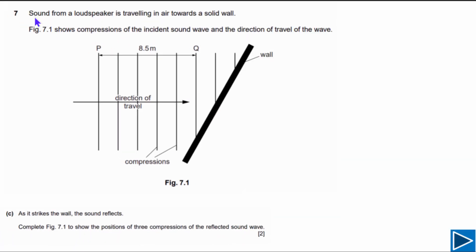For question number seven, sound from a loudspeaker is traveling in air towards a solid wall. The solid wall is shown, and the direction of travel is the incident ray. The lines represent compressions, which are the wave fronts. We need to complete figure 7.1 to show the positions of three compressions — that is, three wave fronts — of the reflected sound wave. This question is about reflection.